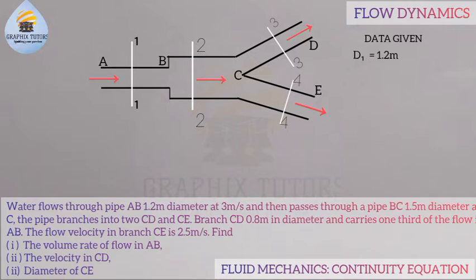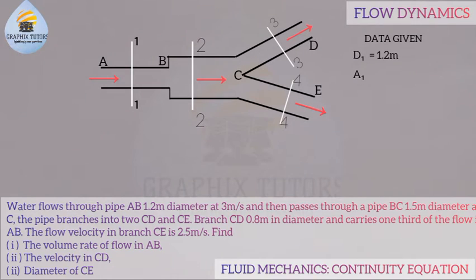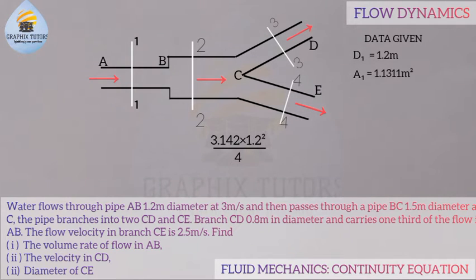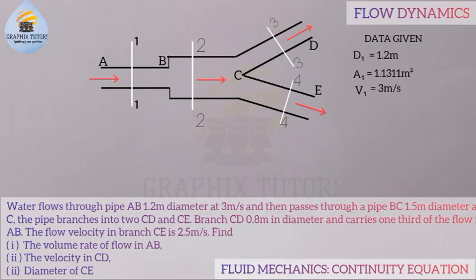We'll calculate the area for each section since every diameter has an area. The area of AB is A₁ = π D₁² / 4. So A₁ = 3.142 × (1.2)² / 4 = 1.1311 m². The velocity at section AB is V₁ = 3 meters per second, as given in the question.